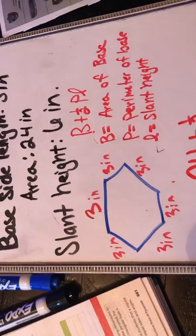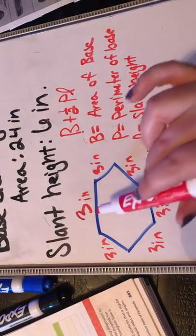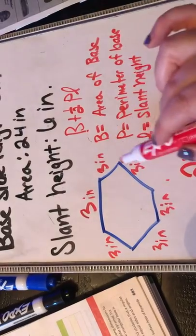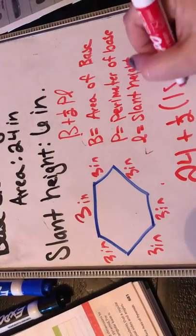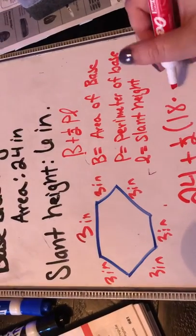They didn't give you the perimeter of the base, but if you draw a picture right here, there are 6 sides to it. So if you add up 3 plus 3 plus 3 plus 3, six times, you'll get 18. And your slant height is 6 inches.